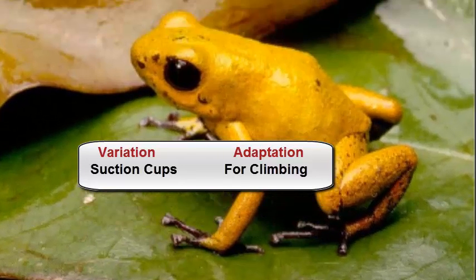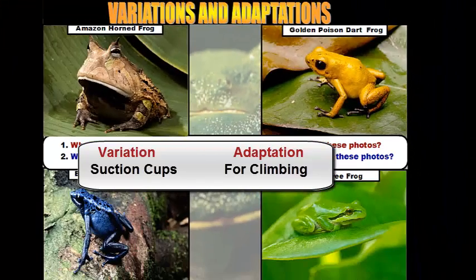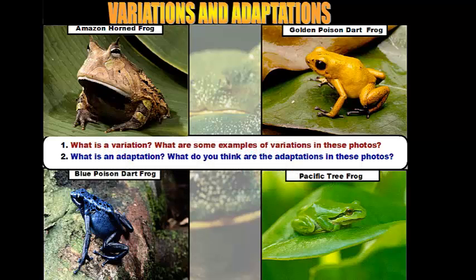Dart frogs usually live on or close to the ground, but they are able to climb and some have been found high up in the trees. So they do have those adaptations to help spread their range of living. Each of these foot adaptations allows these organisms to get to a place to escape predators or to find food in order to survive.